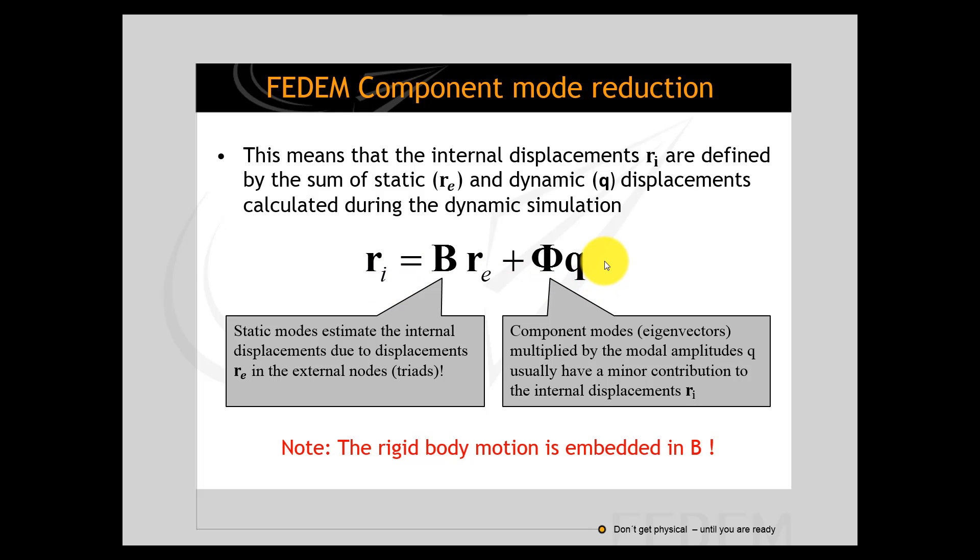If you include the fixed interface normal modes, you will calculate the modal participation factors or amplitudes which are multiplied with the component mode shapes. And those are superimposed on the contributions from the external nodes. And that gives you an even better estimate of the internal degrees of freedom or displacements.